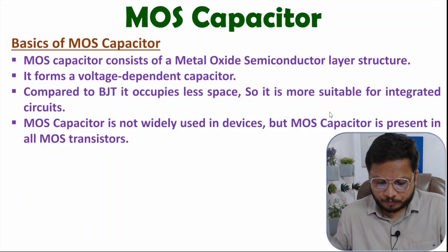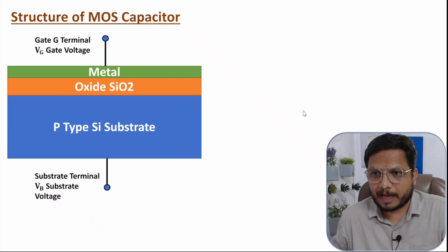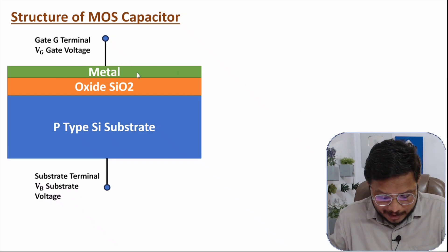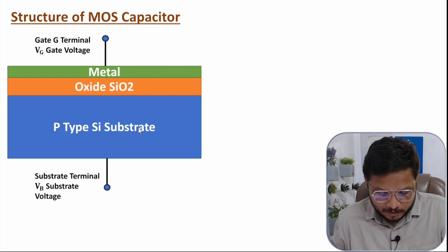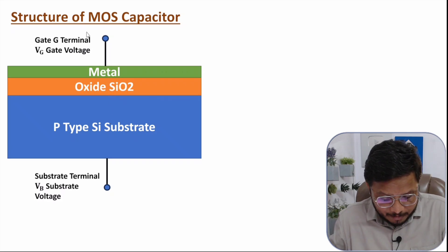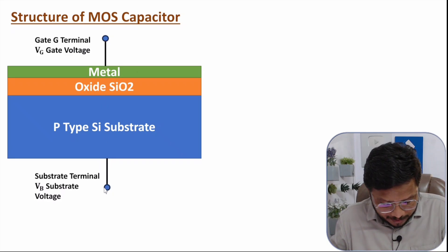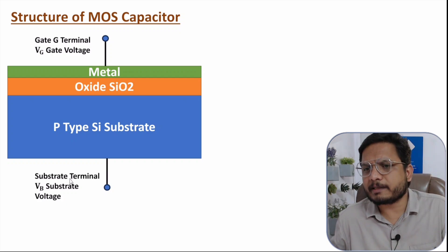Now let me explain a few more fundamentals related to the structure. As I have told you, we have three layers: metal layer, oxide layer, and a P-type substrate — though there can be an N-type substrate as well. Based on these layers, the name is metal oxide semiconductor. There are two terminals: with the metal we have the gate terminal, and with the substrate we have the substrate terminal, also referred to as the base terminal in some books.